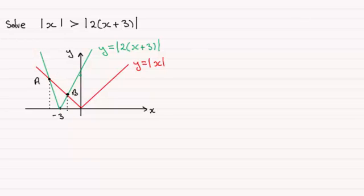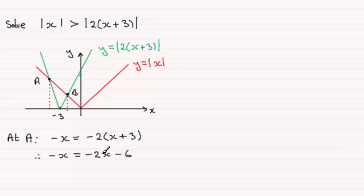So how do we find out what a is? At a it's going to be the intersection of this graph coming down here with this part of the green graph. Well this one coming down would be the graph of y equals minus x. So we've got minus x equaling minus 2 lots of x plus 3. If we solve this by expanding the bracket we've got minus x equals minus 2x minus 6. If we add 2x to both sides we end up with x equals minus 6.